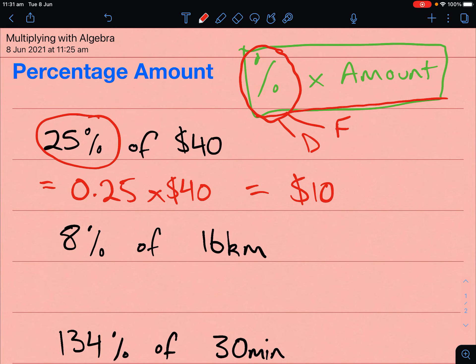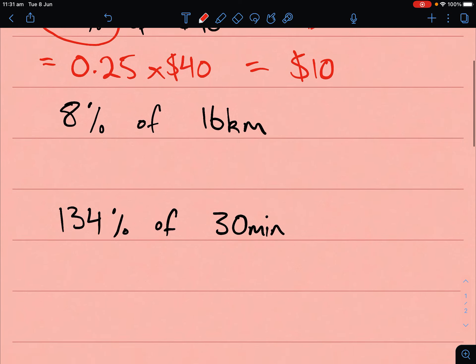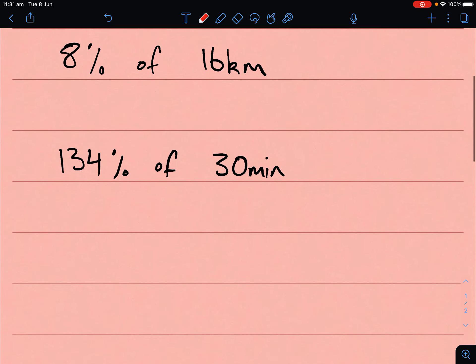If this was a sale and you're in the shops, you'd be getting $10 off your shorts. Let's have a look at the next one. In this one we need to work out 8% of 16km. This might be for some sort of cross-country track and we've found out that 8% of the track is bush that you're going to be running over, and we want to know how much of that in kilometers is bush.